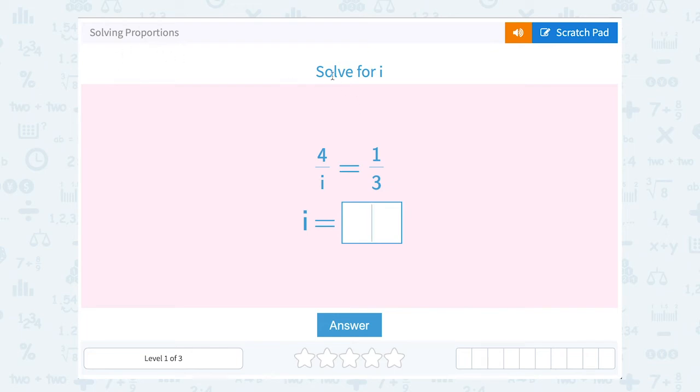Solving proportions. They asked us to solve for i, and we have 4 over i is equal to 1 over 3.